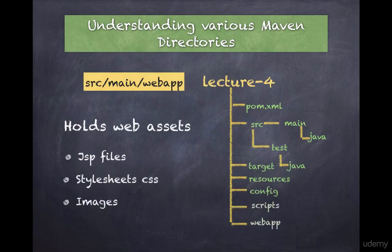Web app folder. The web app folder holds web asset files such as JSP, Velocity, FreeMarker, stylesheets, and images. These are packaged into a web app when the war file is built.